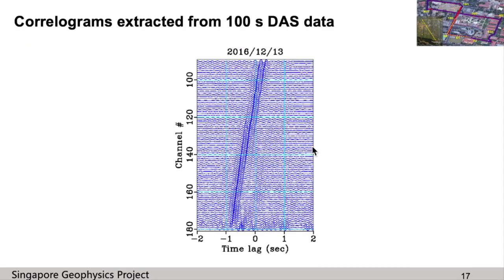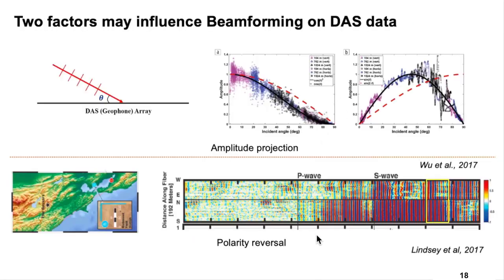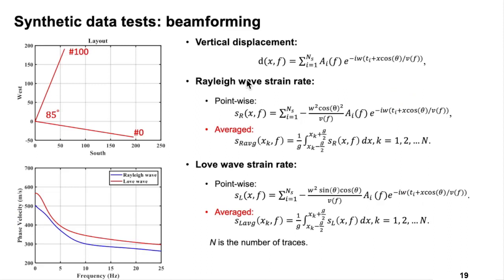This slide shows an example of the extracted correlograms. It's asymmetric. The signal propagating along this direction was generated from the traffic, and it provides us the apparent velocity information, so we need to do the directional correction. Beamforming is commonly used on the virtual displacement recorded by the geophone — there is no amplitude projection or polarity reversal in that data. However, for DAS data, both these two factors exist and may influence the beamforming results. So I did some sensitivity tests.